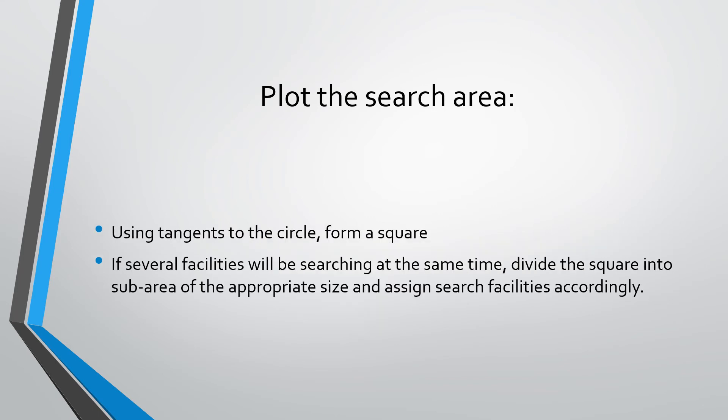Once you draw the circle, using tangents to the circle, form a square as shown in the previous diagram. If several facilities will be searching at the same time, divide the square into sub-areas of the appropriate size and assign search facilities accordingly based on the number of search crafts available.